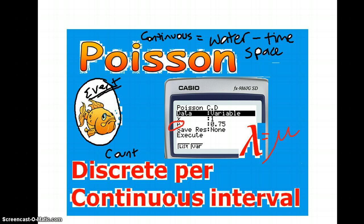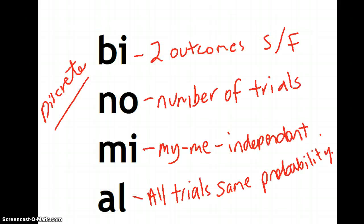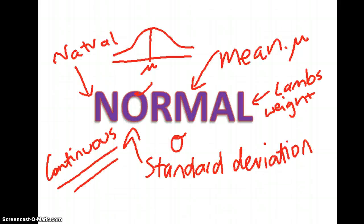The lambda symbol is basically a mean. You only get given the mean in the question, and from that mean you can work out the probability of a certain number of events occurring. So Poisson is all to do with events in a time or space, whereas binomial is to do with successes and failures in a fixed number of trials, and normal is all to do with the mean and standard deviation and the bell curve.